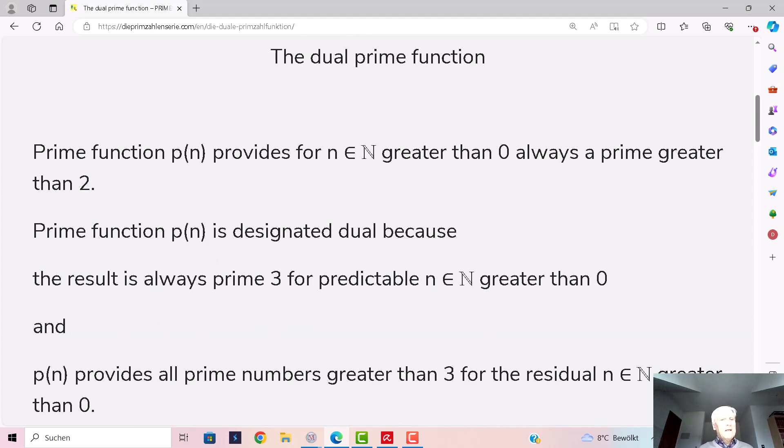and p(n) provides all prime numbers greater than 3 for the residual n greater than 2.